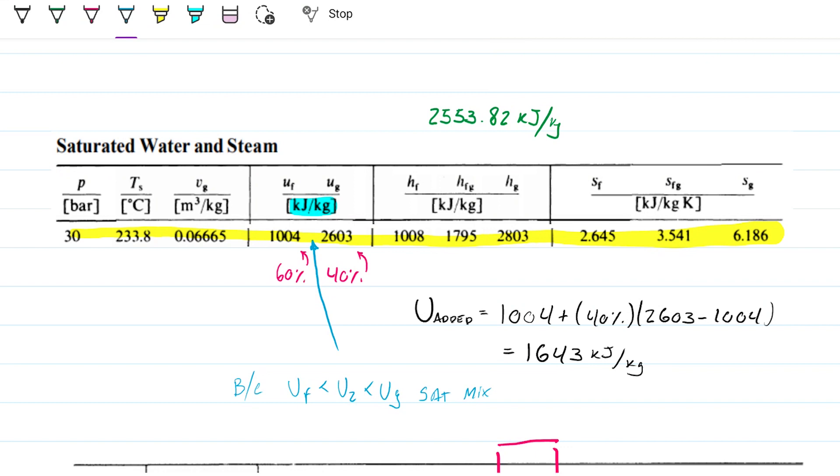or determine what's the quality of this saturated mixture, right? Because they're asking us the specific internal energy of the resultant mixture and define its state. So that's pretty much defined. It's a saturated mixture. It has three megapascals, and its internal energy is 2553.